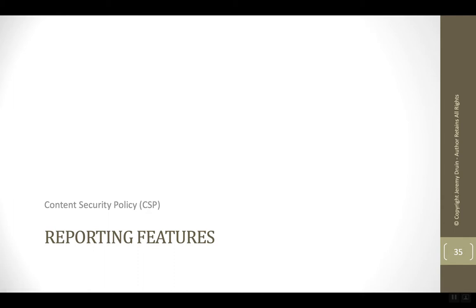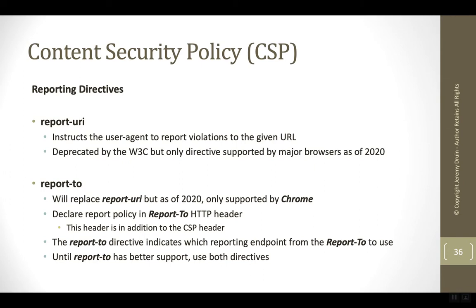Content security policy has several reporting features that are very useful for letting the development team know when one of the policies is fired. This is an underrated part of content security policy. It lets the development team have the browsers used by their users report back when there's a problem. If one of the policies fires off, it's an indication that something is wrong — some way to attack the application. It's great for the development team to get notice of this so they can double check that they've installed all their primary security controls and followed all the best practices for the page that is reporting the content security policy violations.